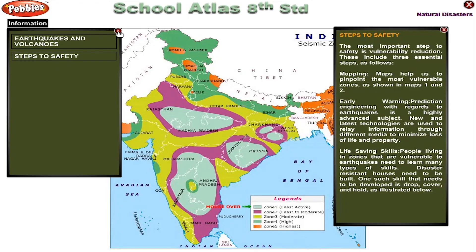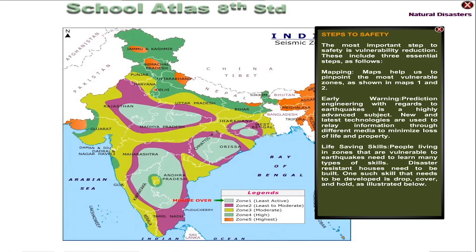Steps to Safety. The most important step to safety is vulnerability reduction. These include three essential steps. Mapping helps us to pinpoint the most vulnerable zones, as shown in Map 1 and Map 2.